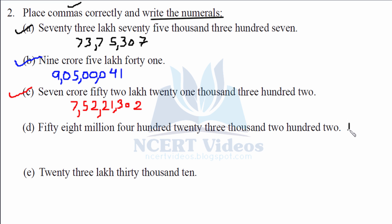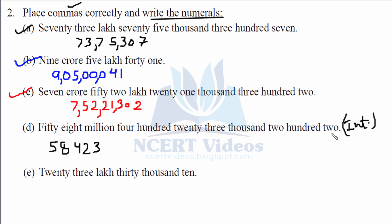Part d: 58 million 4 hundred 23 thousand 2 hundred 2. Here it is international — remember, millions come in the international system, not Indian standard. We write 58,423,202 directly in terms of international standards. Now placing commas after every three digits according to international standards of numeration.